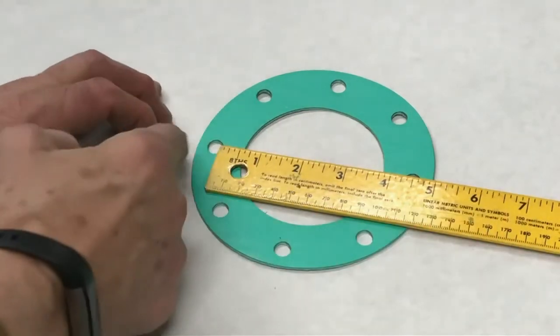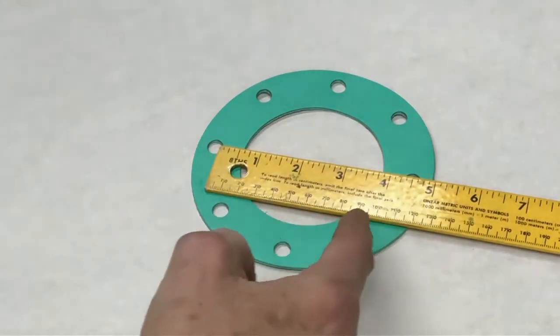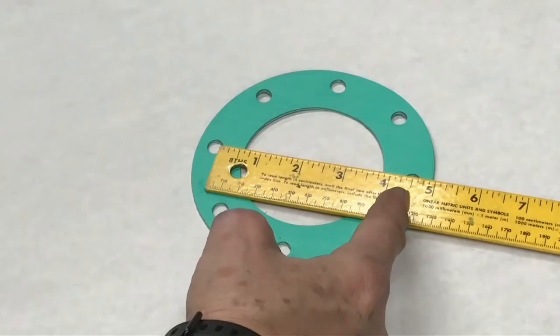So this is on the right side of this hole to the right side of that hole. And we see that the diameter of the bolt circle is four and five-eighths inches.